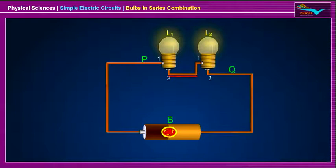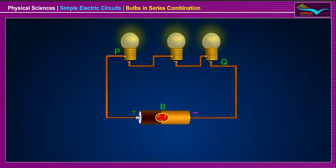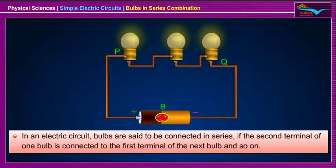Such connections can also be made using three or more bulbs. In an electric circuit, bulbs are said to be connected in series if the second terminal of one bulb is connected to the first terminal of the next bulb and so on.